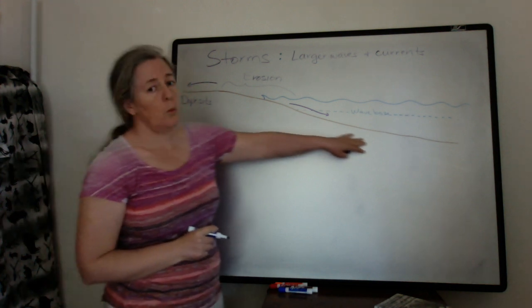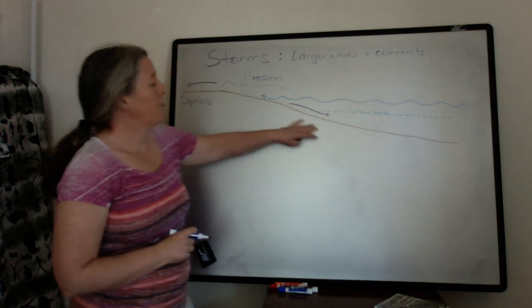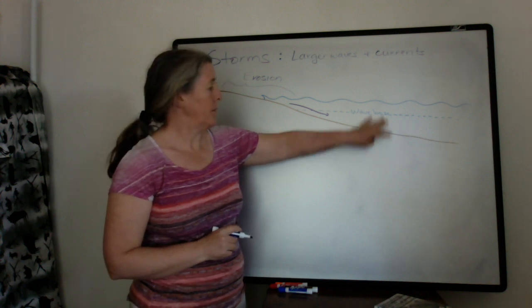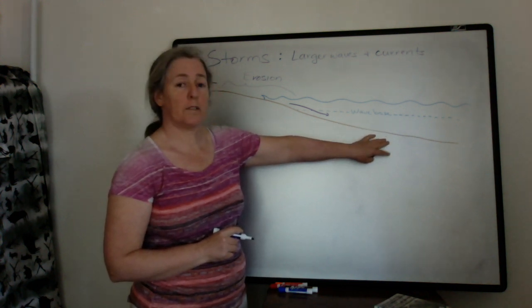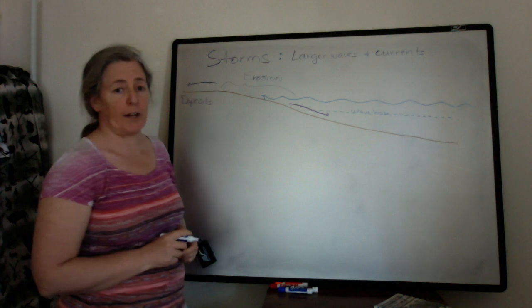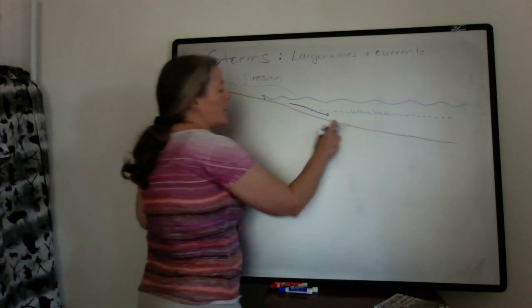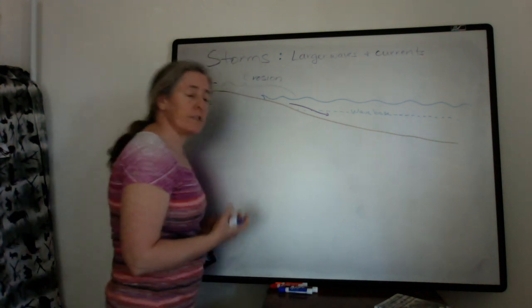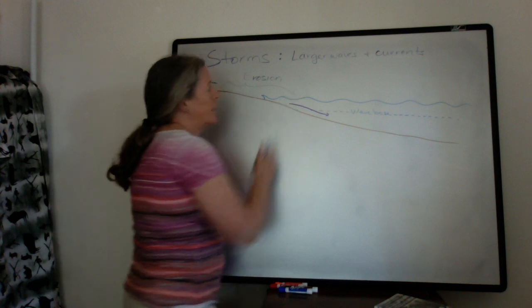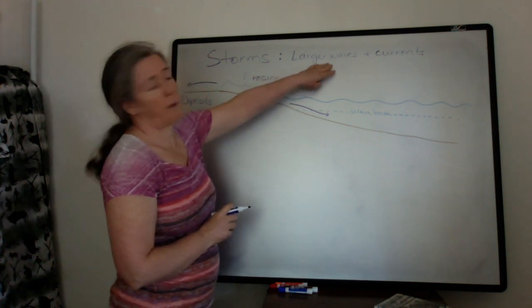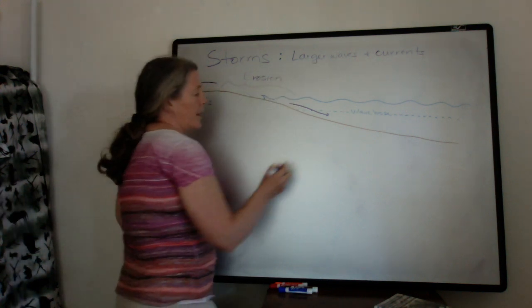We often see storm deposits in these nearshore but deeper water types of environments. We often get very characteristic deposits that are influenced by this combination of waves and currents.